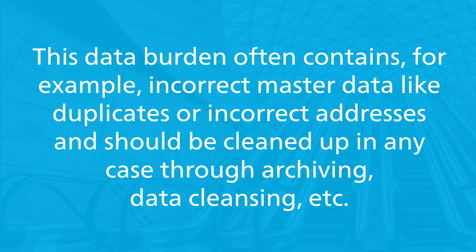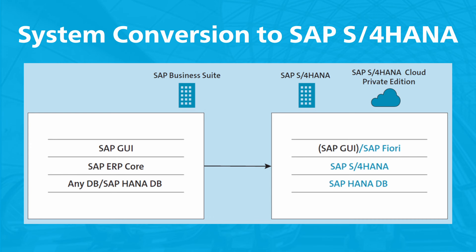The typical SAP data migration scenario of the brownfield approach is a system conversion — that is, the conversion of an existing SAP ERP system to a new SAP S4 HANA system while retaining the existing configuration and all the data. In this diagram, notice how a system conversion is only possible to products based on SAP S4 HANA, specifically the on-premise version.